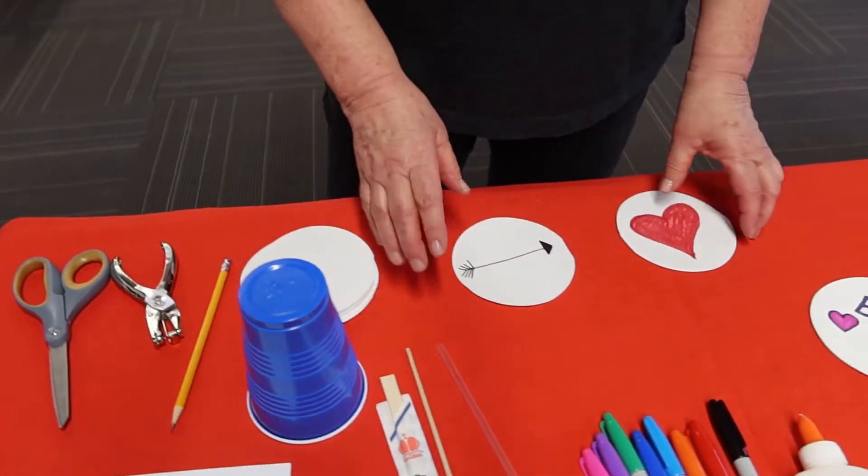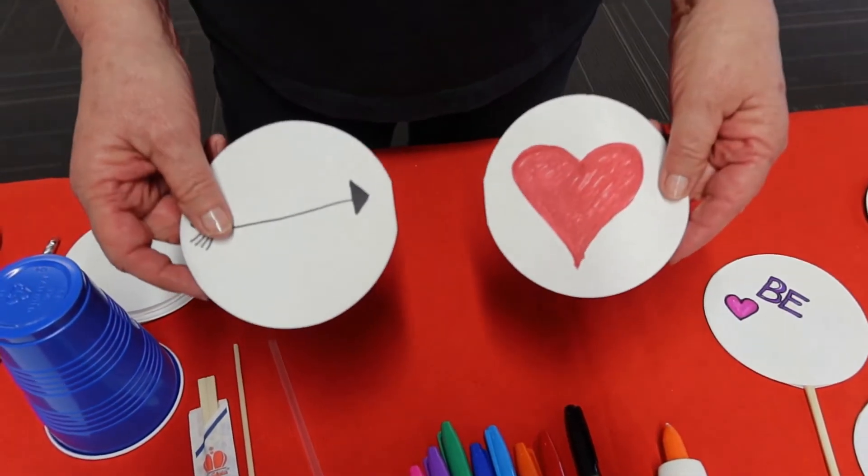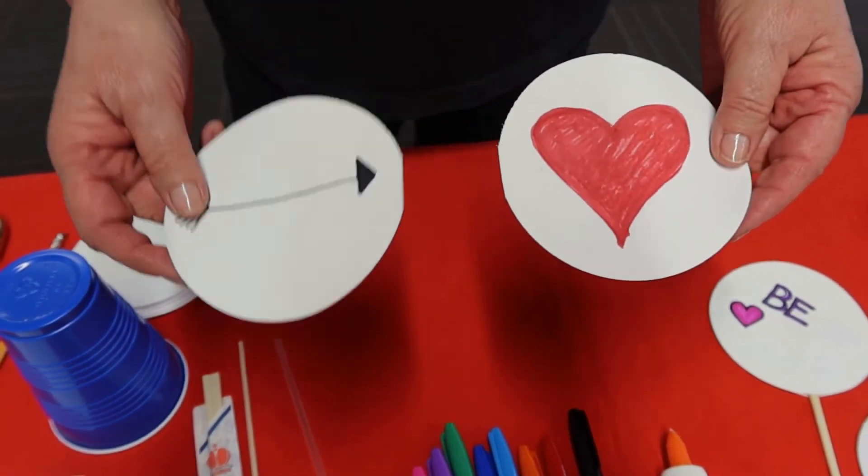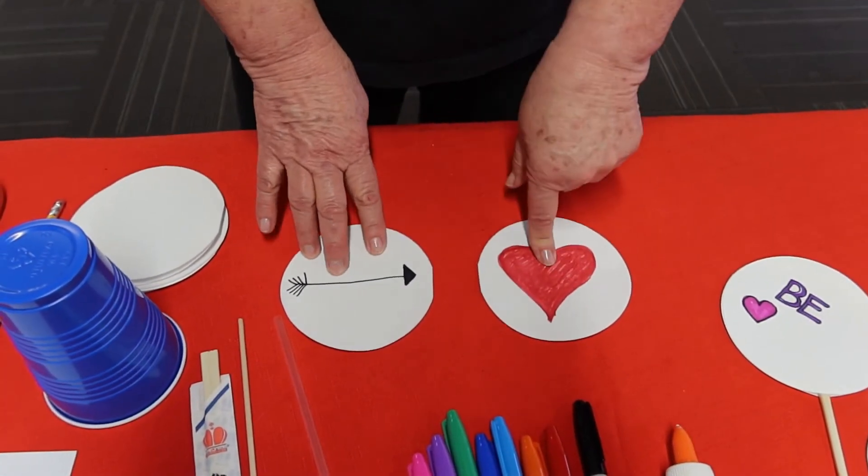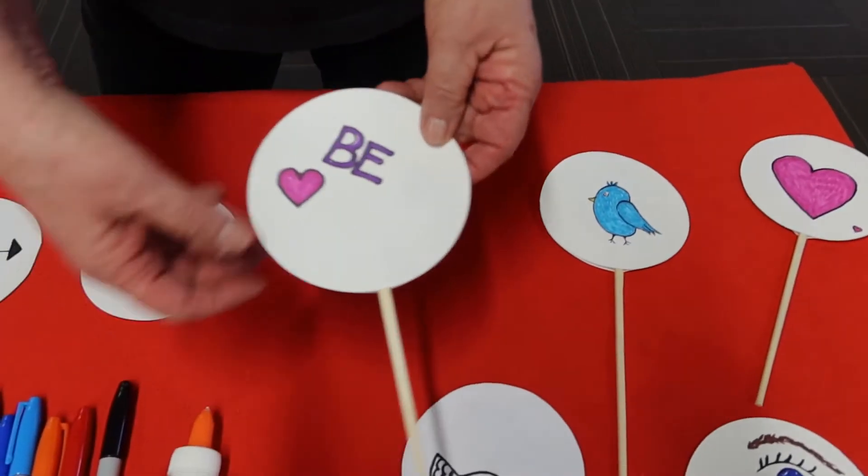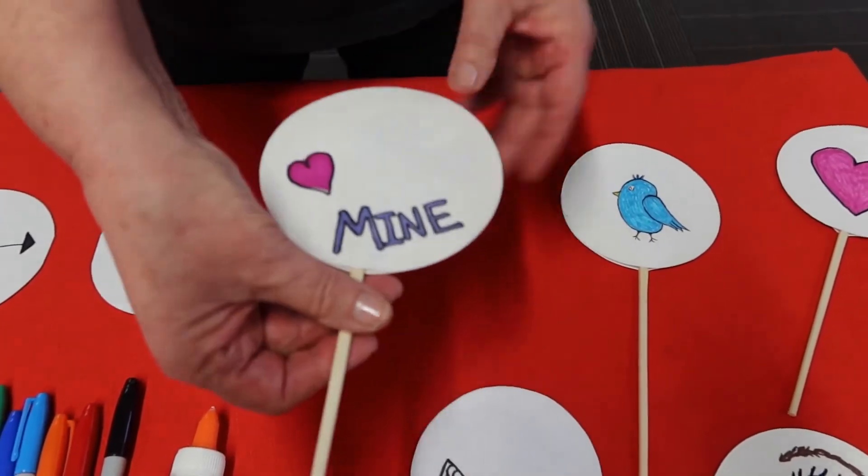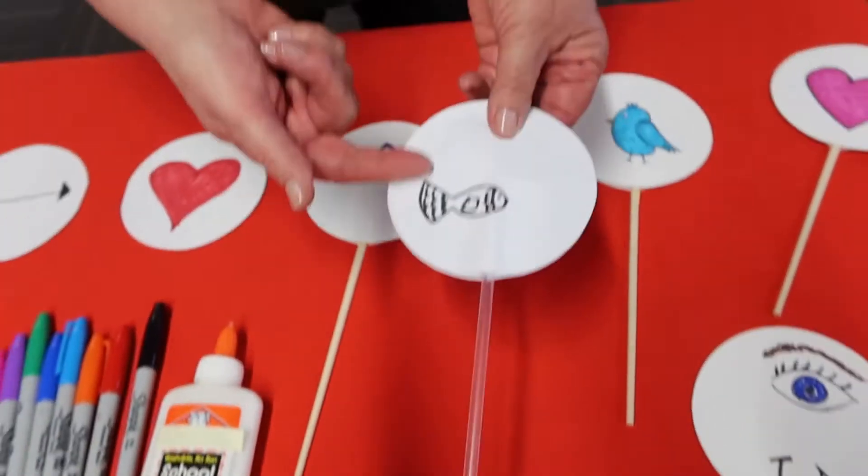The next step is you'll draw two complementary images. For instance, here we have a heart and an arrow, and this one uses words. It says be mine. Here we have a fish and someone that wants to eat a fish.